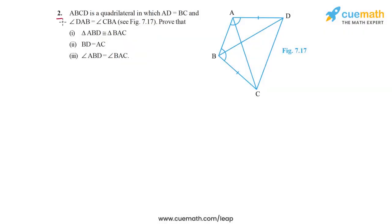In question 2 of this exercise, the problem statement says ABCD is a quadrilateral in which AD is equal to BC, and angle DAB is equal to angle CBA. Using this information, we have to prove that triangle ABD is congruent to triangle BAC, and also that BD is equal to AC and angle ABD is equal to angle BAC.